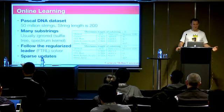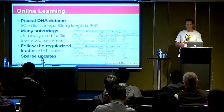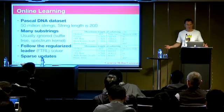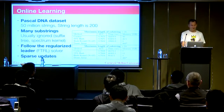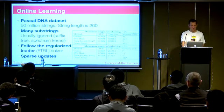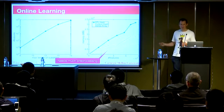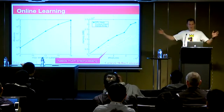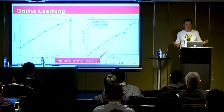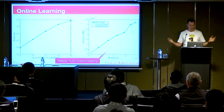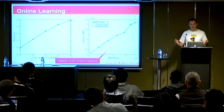For online learning we took the Pascal DNA dataset: 50 million strings, string length up to 200, looking at all substrings — specifically substrings of length 16 and 14, because other solvers couldn't handle more. Rather than using fancy data structures like suffix trees or the spectrum kernel, we just throw it directly at the solver. We used FTRL — follow the regularized leader — as a solver, getting nice sparse updates. As substring length increases, the number of features increases roughly exponentially. We are not quite as memory efficient as the dense array approach, but almost as efficient and definitely better than STL.